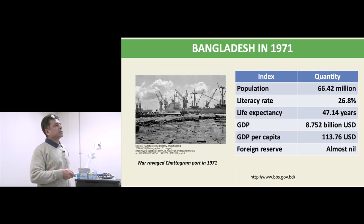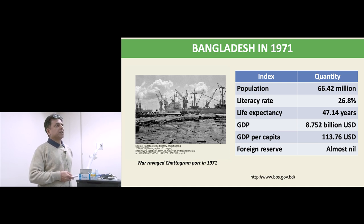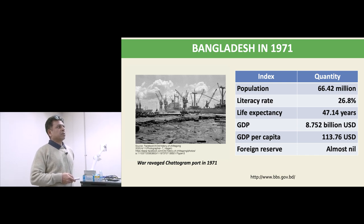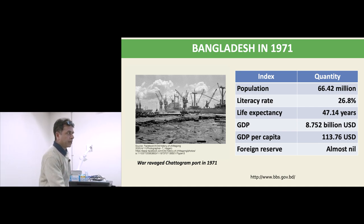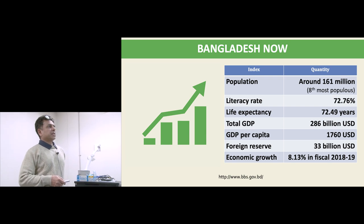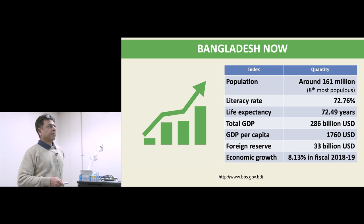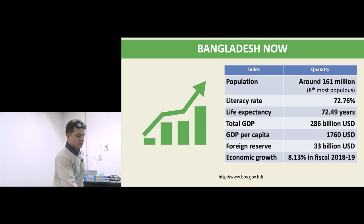In 1971, the population was 66.2 million, literacy rate was 26%, life expectancy was 47 years, GDP was 8.7 billion, GDP per capita was 113 USD, and foreign reserves were almost nil. Now, the population is around 161 million, literacy rate is about 72%, life expectancy is 72 years, total GDP is 286 billion, GDP per capita is 1,760 USD, foreign reserves are 33 billion USD, and economic growth was 8.31% in the fiscal year 2018–19.